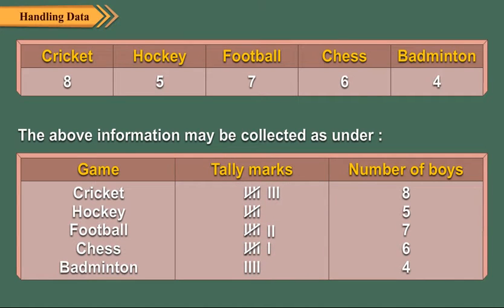Once we have a set of 4 tally marks for a certain choice, we indicate the 5th mark by crossing the 4 tally marks. We then start with a new set of tally marks.